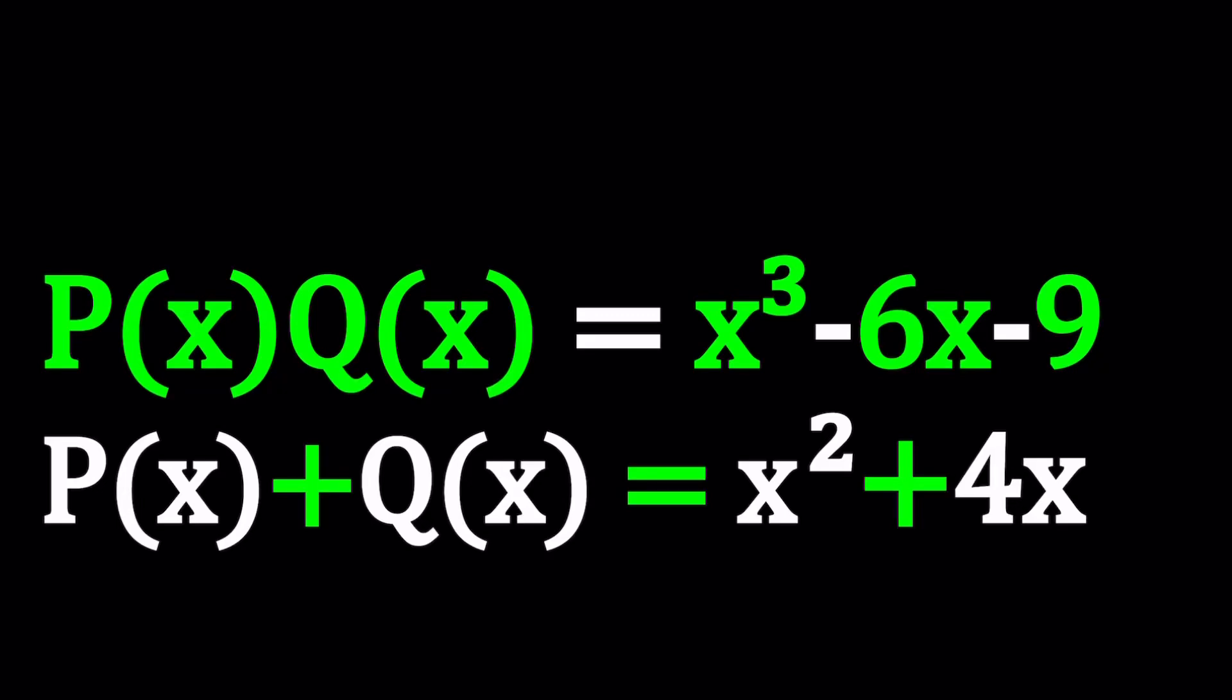Hello everyone. In this video, we're going to be solving a polynomial system, a homemade problem. We have P(x) times Q(x), where P(x) and Q(x) are polynomials, and their product is x³ - 6x - 9. Their sum is x² + 4x.